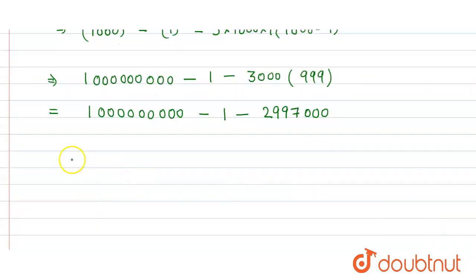So here we get is equal to, here similarly, so here we get 1,000,000,000 minus 2,997,001.